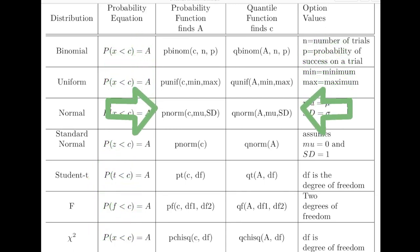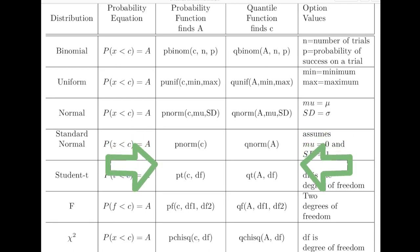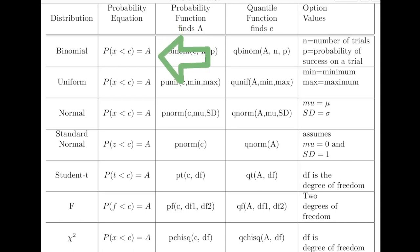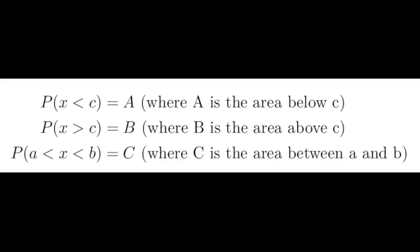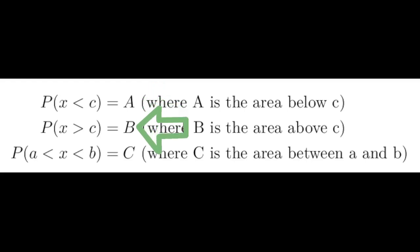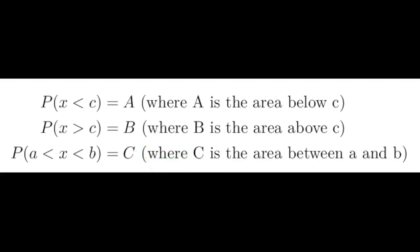An important thing to notice is that these functions are all associated with the probability equation where the variable is less than some c value. We're interested in solving three types of probability equations: one, where the probability of the variable is less than c; two, when the probability of the variable is greater than c; and three, the probability the variable is between two values.